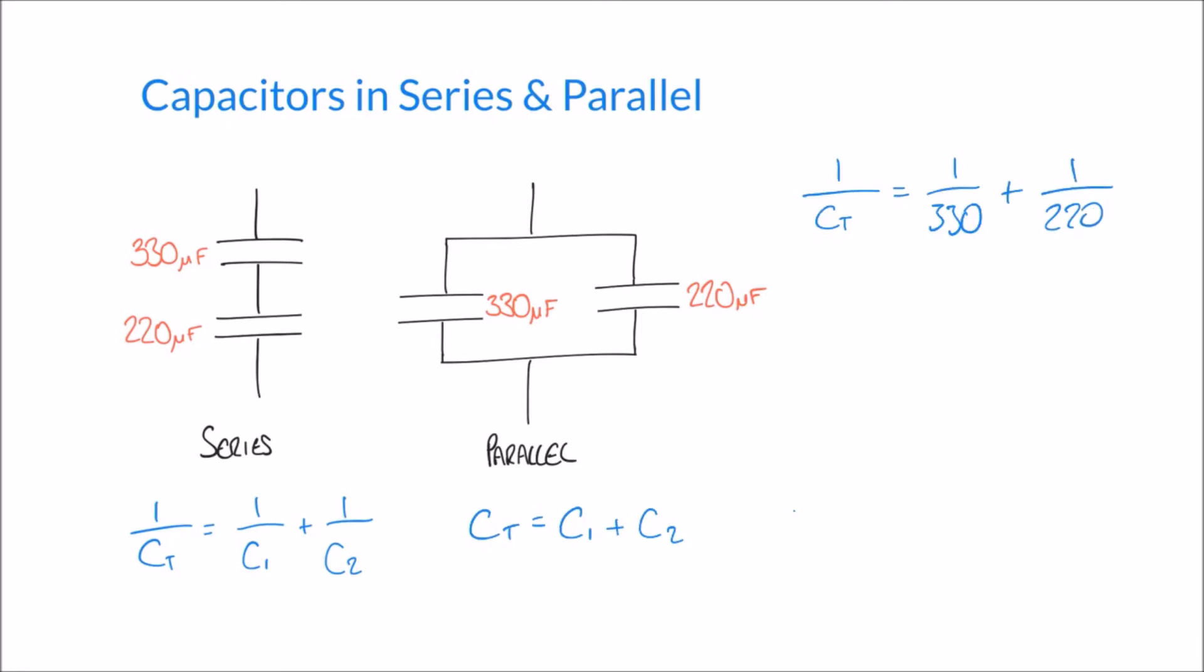You'll notice here that these capacitances are in microfarads, which should be expressed as 10 to the minus 6. I can do that in my formula here, but if I'm consistent and I know that my capacitances are both in microfarads, then in this case I'll get my answer in microfarads. So I'm happy to leave that just as 330 and 220.